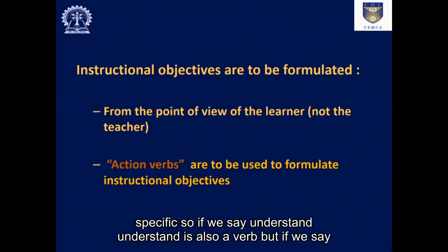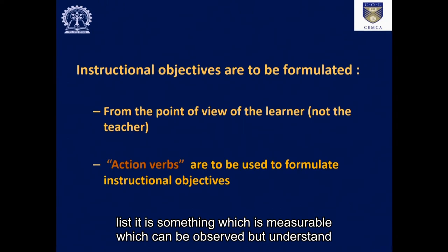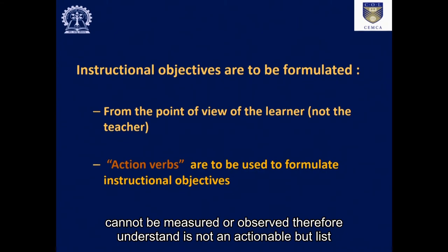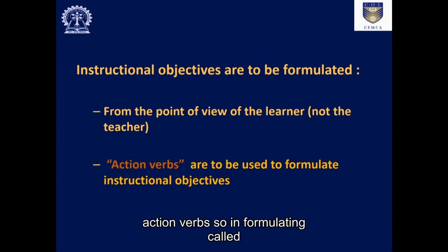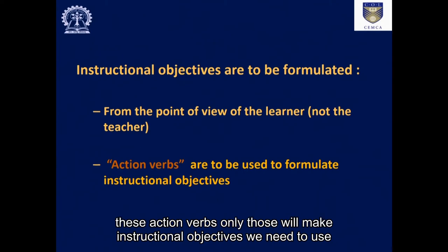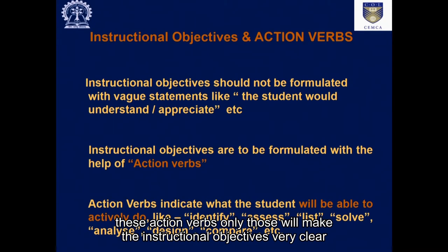For example, 'understand' is a verb, but if we say 'list,' that is something measurable and observable — whereas 'understand' cannot be measured or observed. Therefore, 'understand' is not an action verb, but 'list' is. Any verb which allows a person to see, measure, and observe the action is called an action verb. In formulating instructional objectives, we need to use these action verbs, as only they will make the objectives clear, specific, and correct.